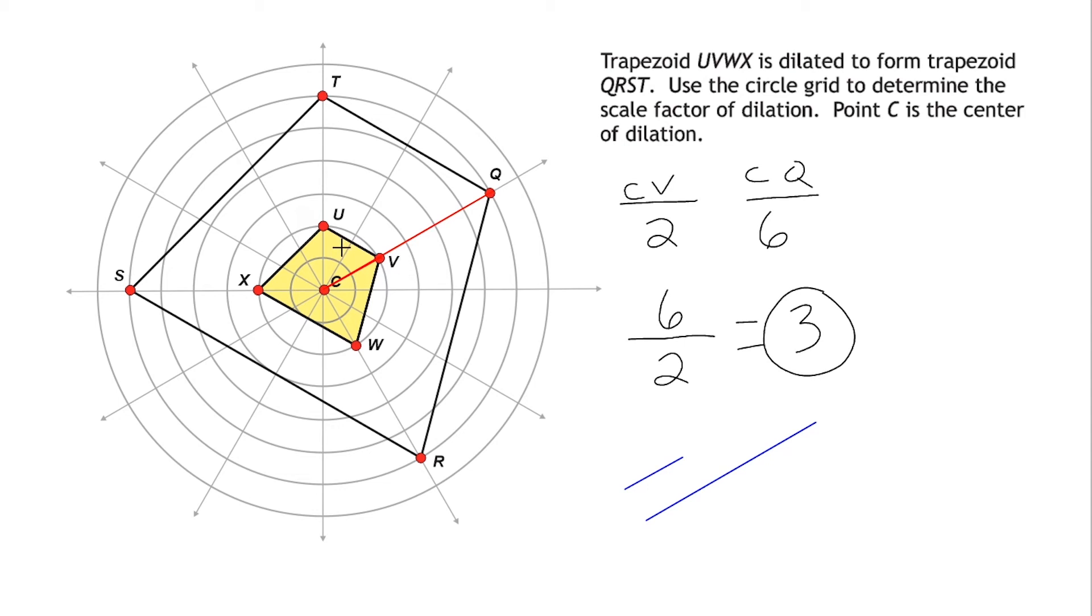Now another thing that we should notice is if we went from point C to U, that is also a distance of 2 units. And then if we go from C to the corresponding point of U, which is T, that would be 6 units. And 6 is 3 times bigger than 2. And the same thing would hold true with line segment C to X. That would be a distance of 2, and 3 times bigger than that would be 6. So if we go from C to S, that is 3 times bigger, or a distance of 6. And from C to W is a distance of 2, and from C to R, that is a distance of 6.